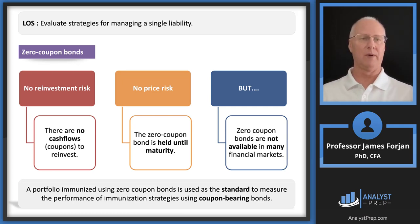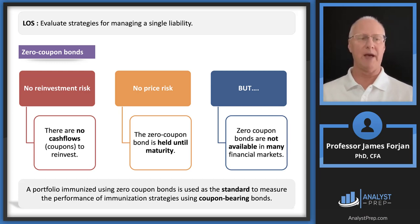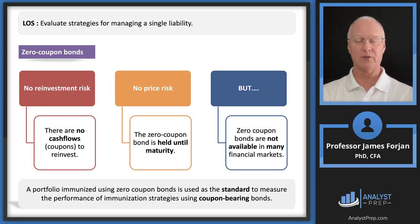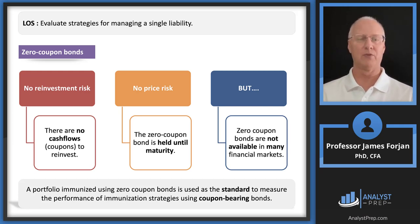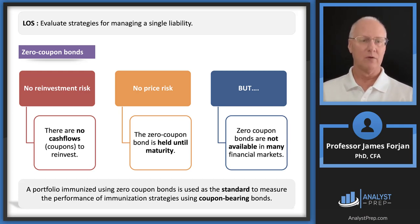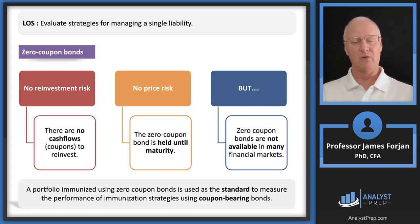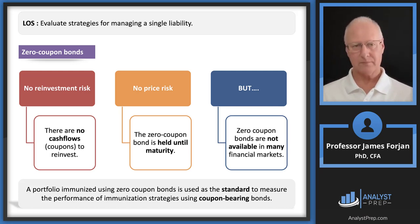With zero coupon bonds, there's no reinvestment rate risk because there are no coupons to reinvest. If we hold the bond until maturity, there is no price risk either — exactly like my $96 bond maturing for $100. However, if forced to sell before maturity there is price risk. The challenge is that there are not a million zero coupon bonds out there — most bonds pay either a fixed or floating coupon rate, so perfect immunization with zero coupon bonds is rarely possible.